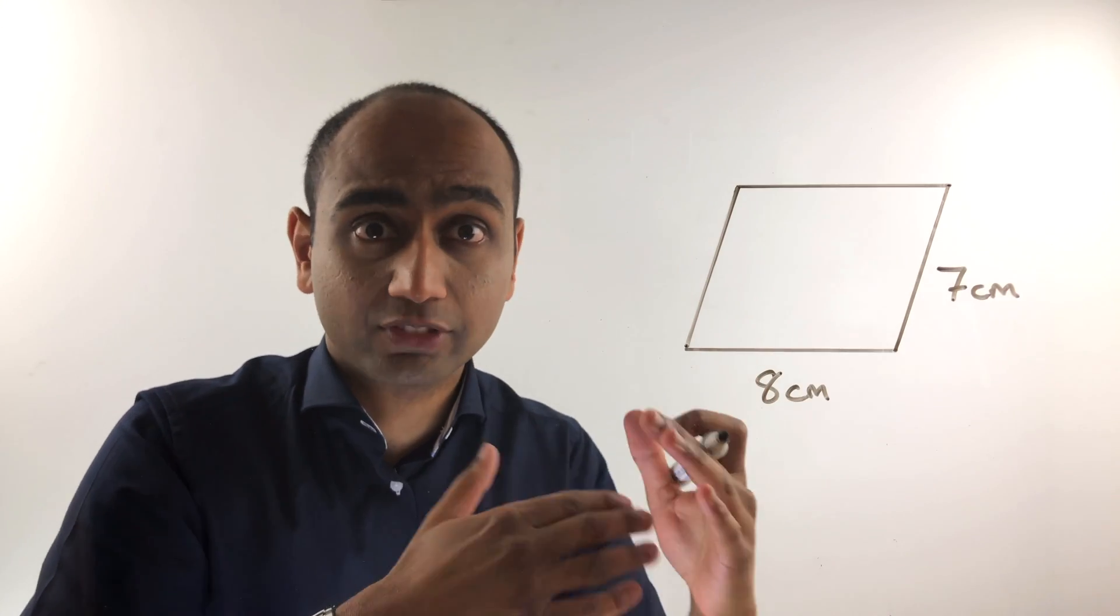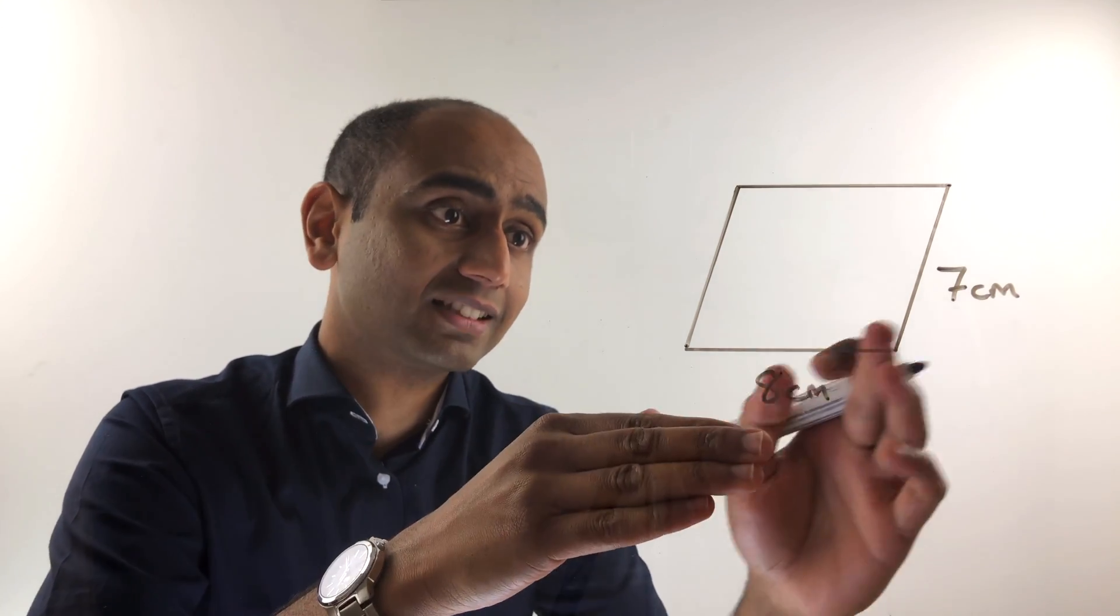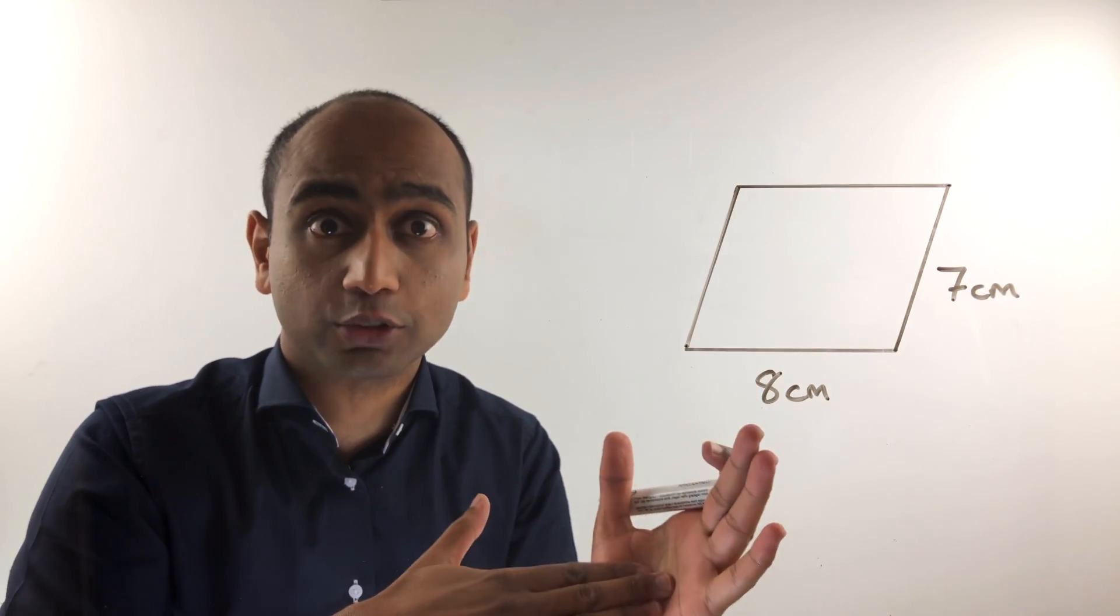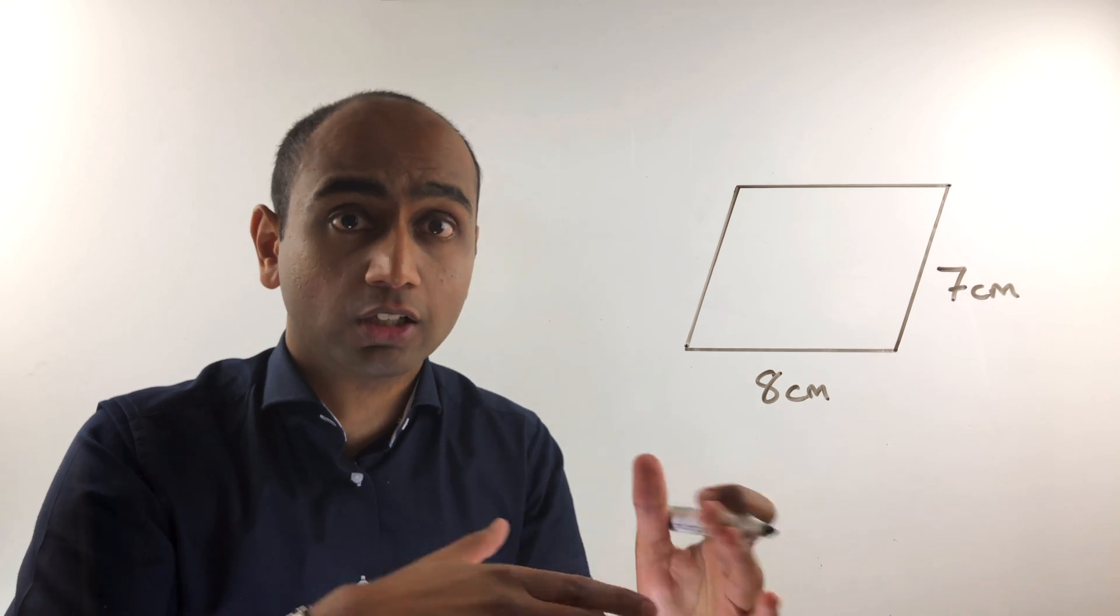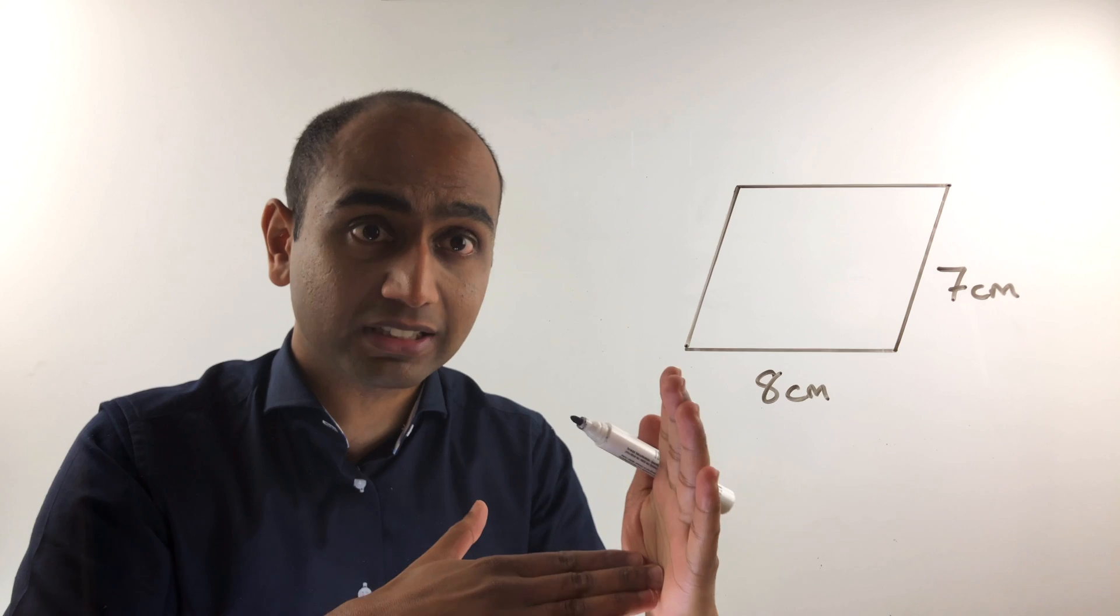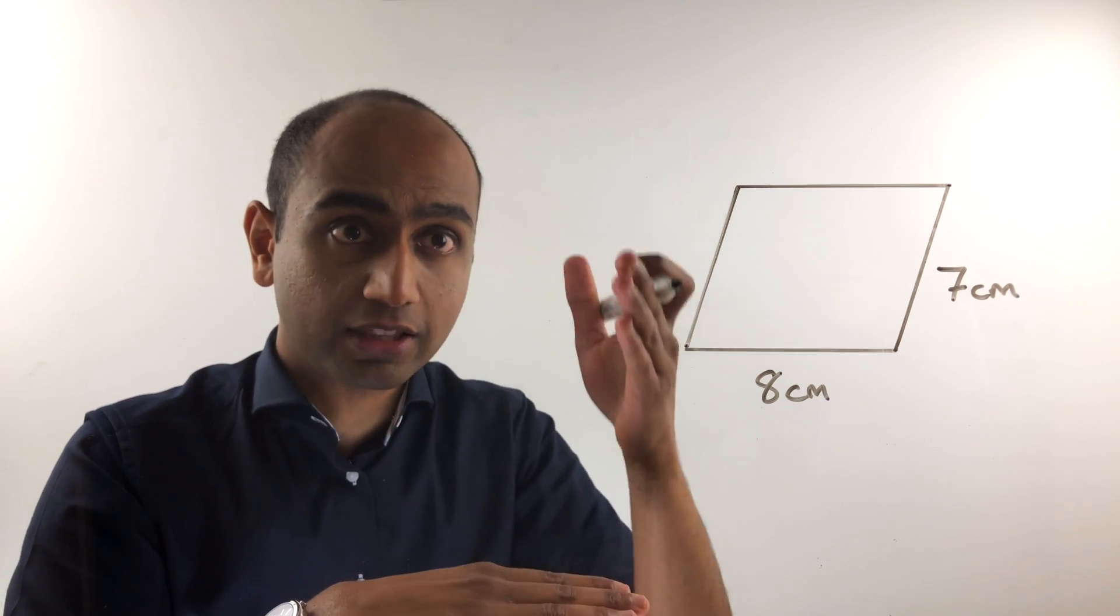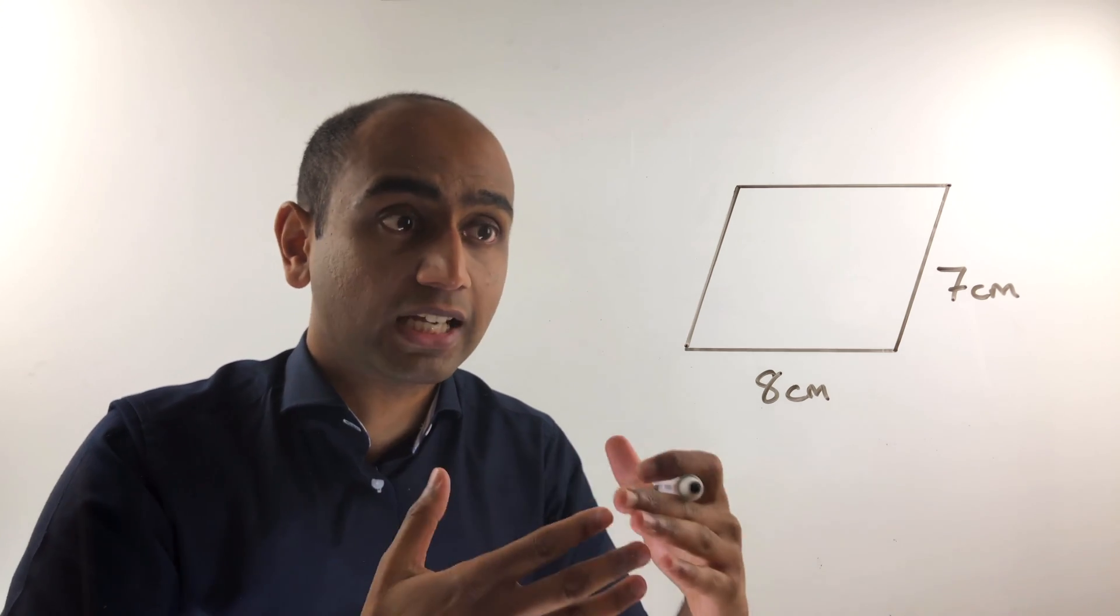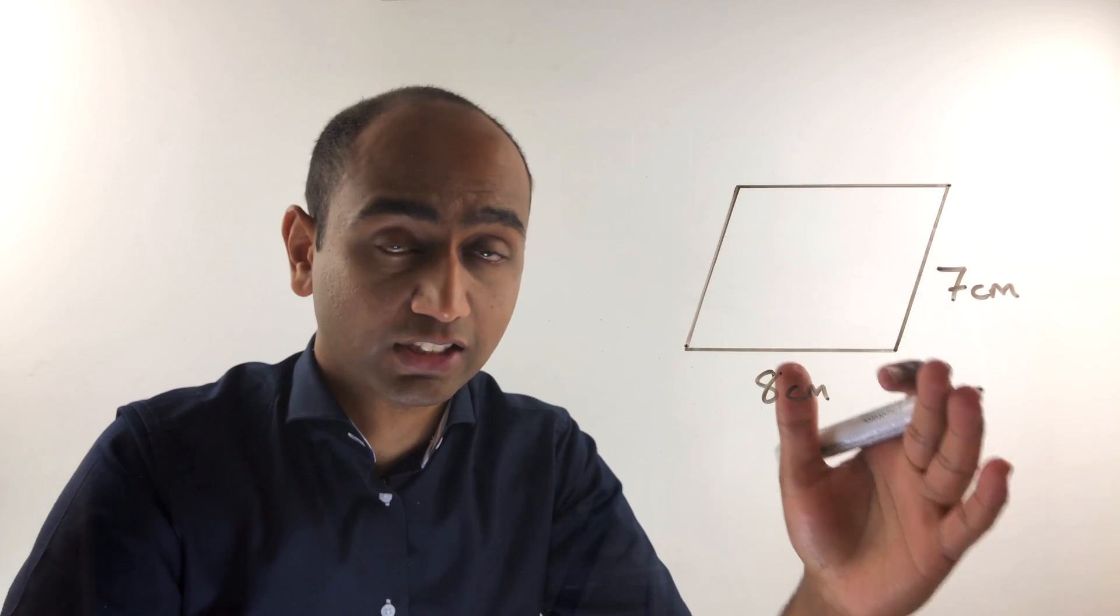I'm going to show you why. The reason 8 times 7 is not going to work is that the 8 and the 7 are not at right angles to each other. Remember the really important thing about the rectangle was that the two sides were perpendicular, so we could multiply the length and the width together to get the area. In this case that's not true.